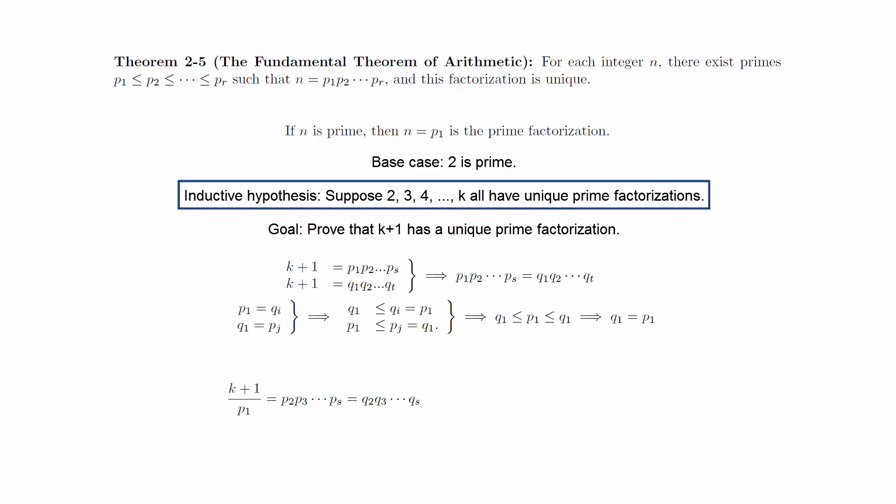By the inductive hypothesis, we know that this factorization must be unique so that the p sub j and the q sub i must exactly correspond to each other. And so we see that the initial factorizations were actually the same, proving that for all integers n greater than 1, we have unique prime factorization.